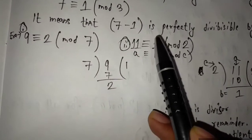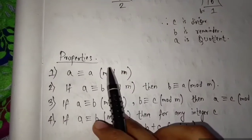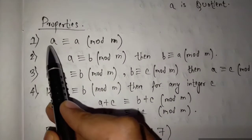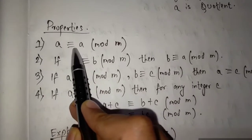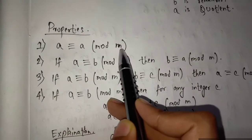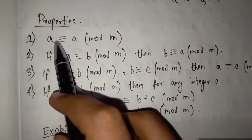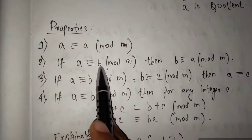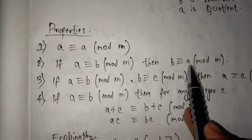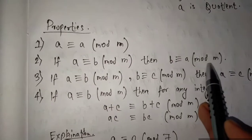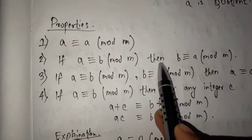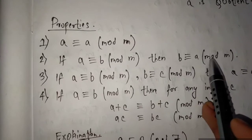So 11 minus 1, which is 10, is divisible by 2. Now let's move to the properties. Property one: A congruent A mod M. Property two: if A congruent B mod M, then B congruent A mod M — meaning if A is congruent to B mod M, then B is congruent to A mod M.